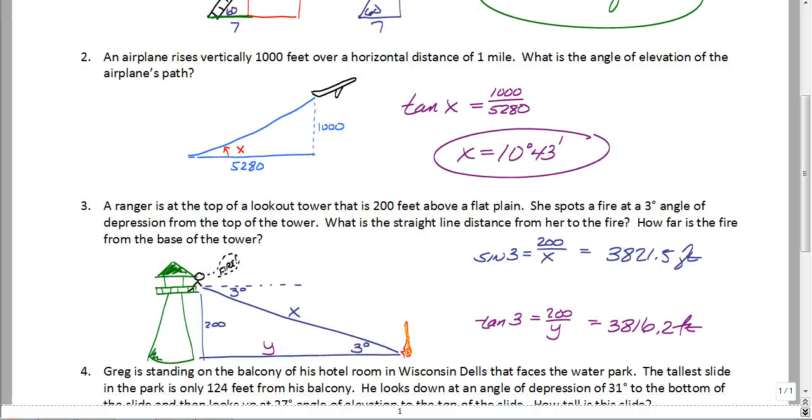So number three, you should have found the distance from the ranger to the fire as 3,821.5 feet. And the fire from the base of the tower is 3,816.2 feet. Now hopefully you had a little bit of fun with this drawing. And hopefully you put the three degrees where it belongs.